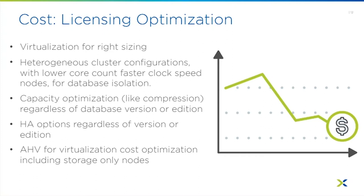We also have storage-only nodes. If your CPU is fine but storage is filling up fast, you can add storage-only nodes — they just provide additional capacity without adding to your CPU-based database licensing count since you're not running any databases on them. We did this at my last job; we had cold storage nodes in an ESXi on Nutanix environment, and they didn't show up as servers in ESXi — the Nutanix cluster was six nodes, two of which were storage-only.